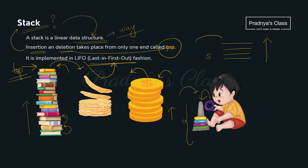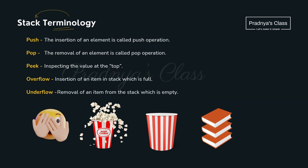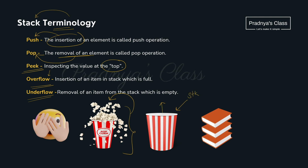Now you understand what a stack is. If you want to add any item, you do it from the top position, and if you want to remove it, that also happens from the top. Now let's discuss some terminologies used with stack. When we insert any element, it is called push. Removing or deleting any element from the stack is called pop. There is one more term — peek — which means checking which element is at the top position. Overflow occurs when the stack is already full and you are trying to insert an item. Underflow means the stack is empty but you are trying to remove elements from it.